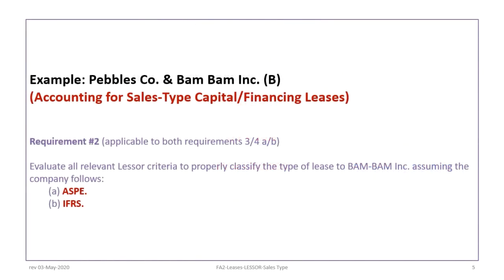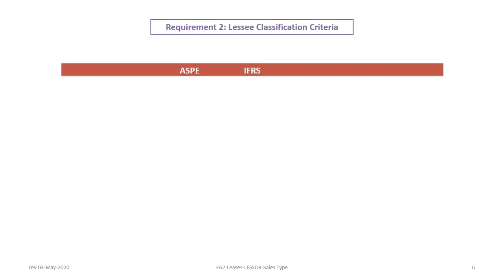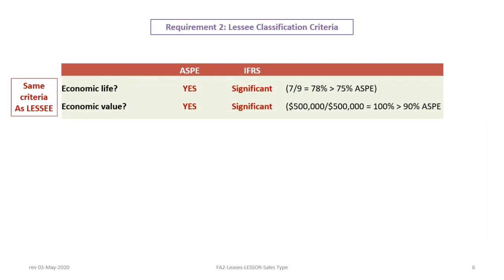Our next requirement, applicable to requirements 3 and 4a and B, is to evaluate the relevant lessor criteria to assess the type of lease to Bam Bam assuming the company follows either ASPE or IFRS. The first two criteria are the same as the lessee criteria: economic life and economic value. Economic life looks at the lease term divided by the nine-year life — a seven-year lease term gives 78%, which is greater than the 75% threshold for ASPE, so it's a capital lease for ASPE, and considered significant for IFRS. In terms of economic value, the present value equals the fair value of the asset, giving 100%, which is greater than 90%, so that's a capital lease for ASPE and significant for IFRS.